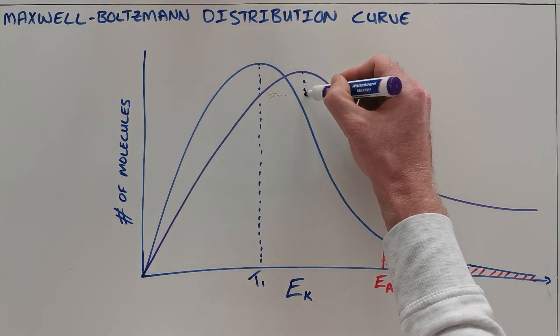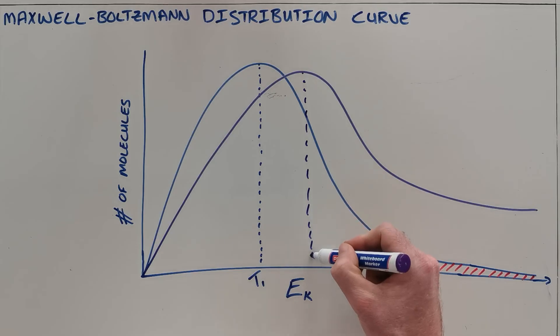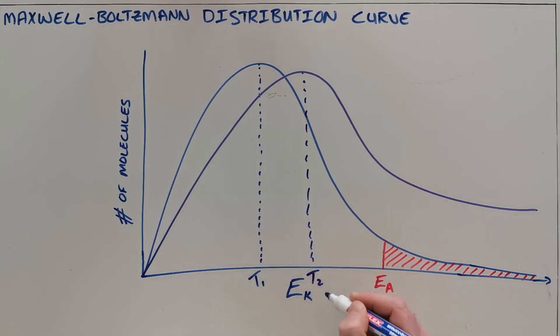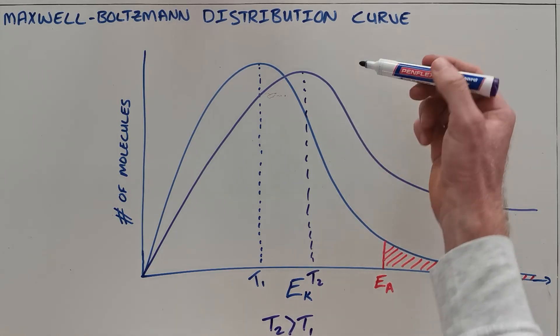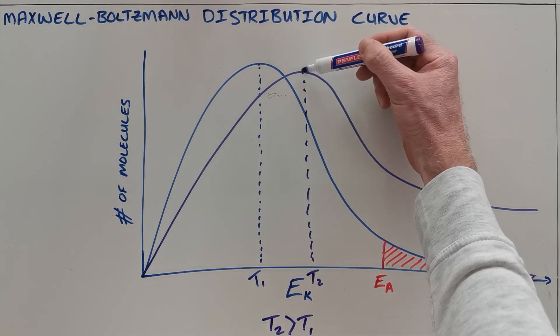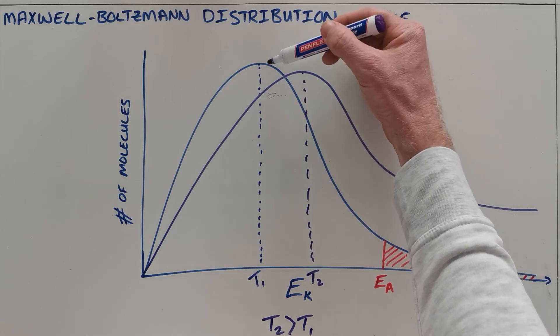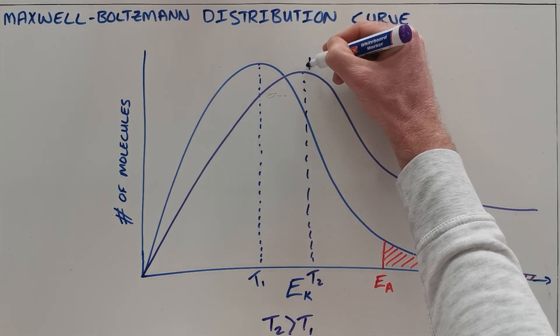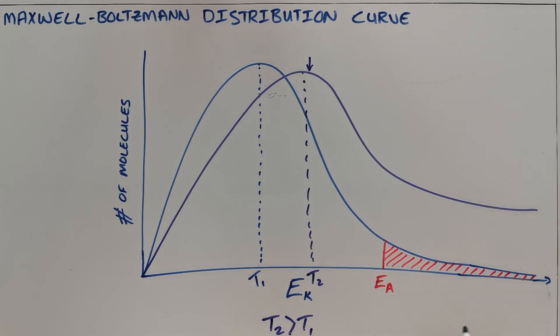What you should see here is that the average temperature T2 is now greater than T1 and you should also see that the maximum number of particles has decreased slightly because the curve has been shifted to the right.